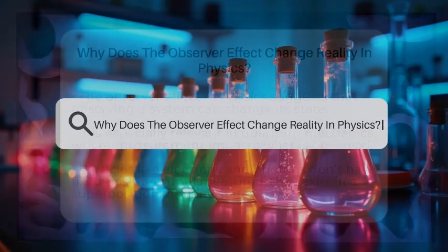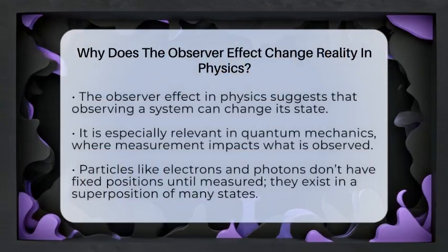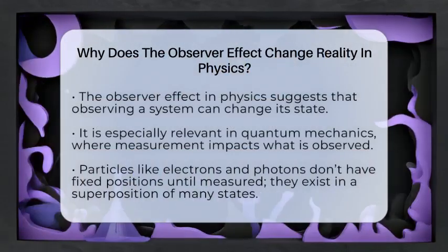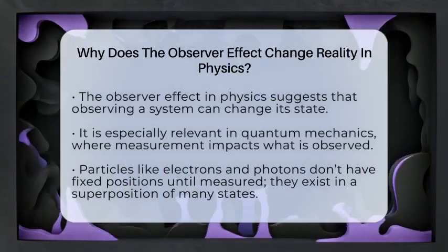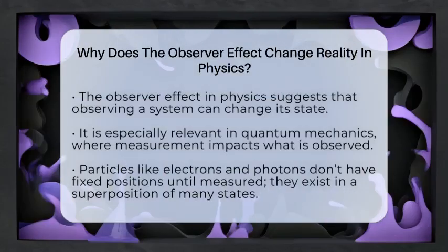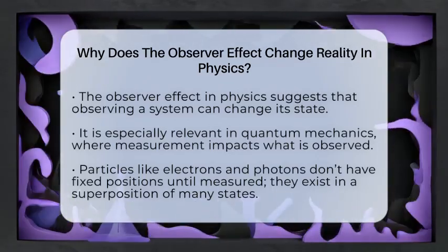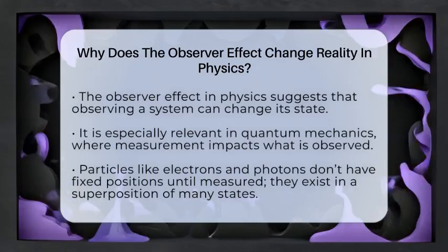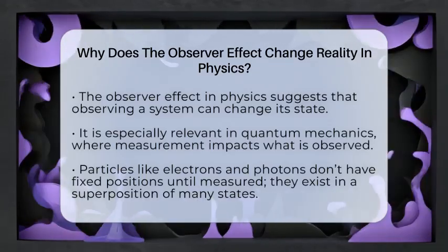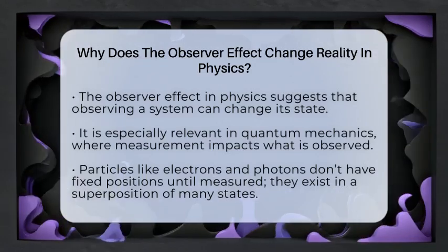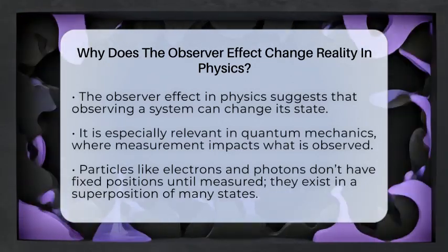Why does the observer effect change reality in physics? Imagine watching a star in the night sky and suddenly realizing that your act of observing might actually change what you see. That's the essence of the observer effect in physics, especially in the strange world of quantum mechanics. It's a phenomenon where measuring or observing a system actually alters its state. This isn't just about seeing something happen — it's about the act of measurement actively changing what is happening.